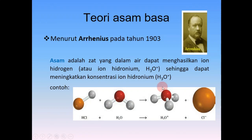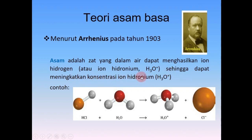Yang pertama kita bahas adalah mengenai teori asam basa. Menurut Arrhenius tahun 1903, asam adalah zat yang dalam air dapat menghasilkan ion hidrogen atau ion hidronium (H3O+), sehingga dapat meningkatkan konsentrasi ion hidronium. Contohnya HCl ditambah air (H2O) akan menghasilkan H3O+ plus Cl-. H3O+ ini bisa juga ditulis sebagai H+, pemberi sifat asam.